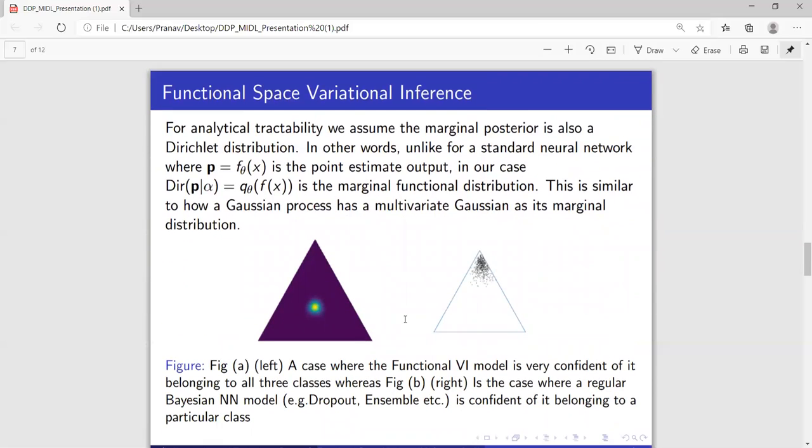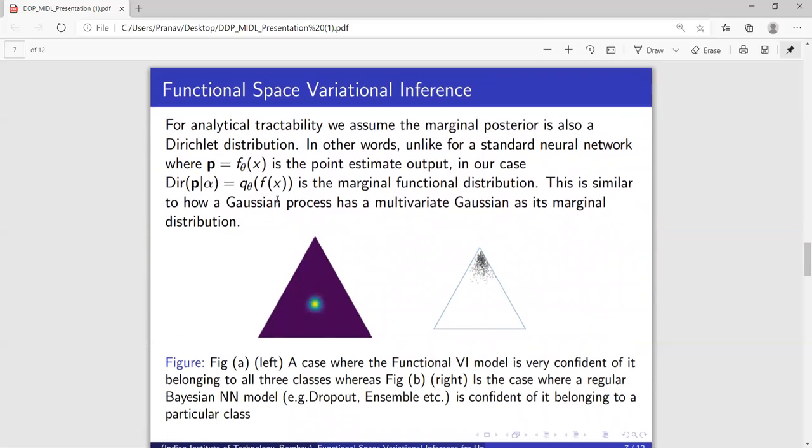Now in our case, the output of a neural network is a distribution of functions. So whereas in the previous neural network, it was just a point on the simplex, it is now an entire distribution on this k-1 dimensional simplex. And for simplicity's sake, we have assumed this marginal functional distribution to be a Dirichlet distribution.